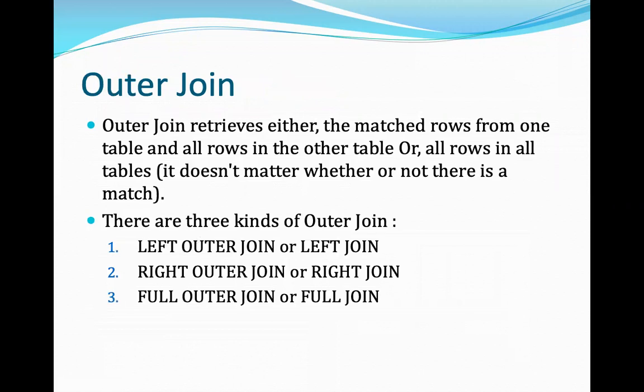The second type of join comes under the category of outer join. What is an outer join? The outer join retrieves either the matching rows from one table, or all the rows in the other table, or all rows in all tables — it doesn't matter whether or not there is a match. So even if the condition is not satisfied, an outer join can still retrieve data.